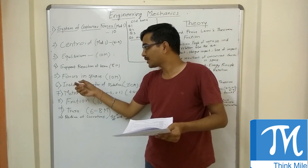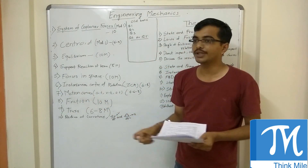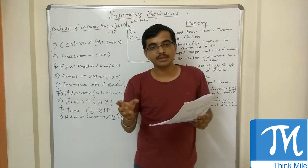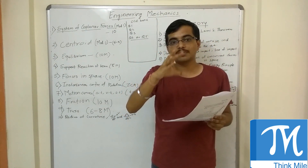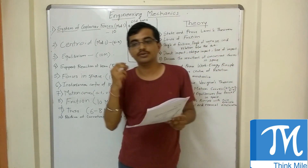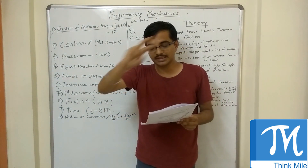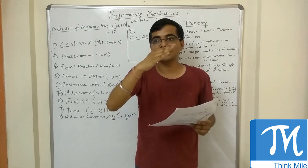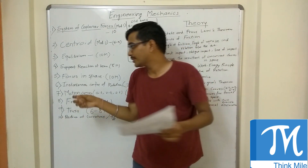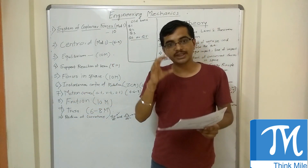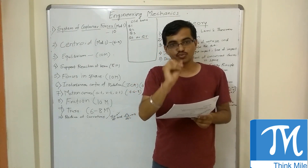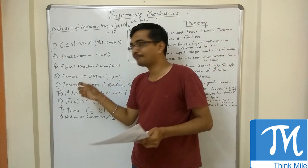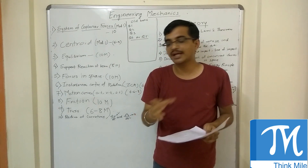There is one more topic in dynamics: instantaneous center of rotation, or ICR. There are around 10 to 15 types of sums. The concept has a formula for ICR and you just have to apply it and solve. However, by seeing the sum, you should be able to guess how to solve it — if you have not seen the sum before, it is difficult to guess how it will rotate. Once you are able to find the way it is rotating, it is very simple. Try to see the solved examples. The angles are very important — once you can find the angles, you can solve the sum.